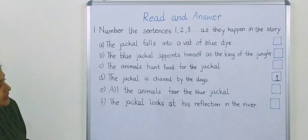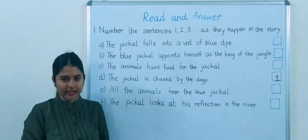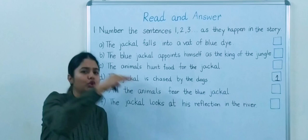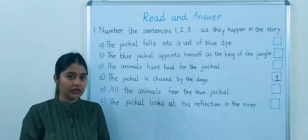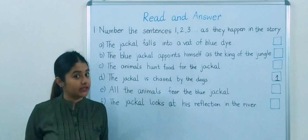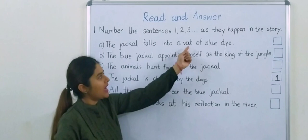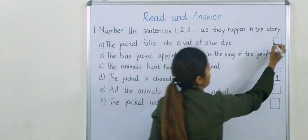Then, what happened next? When he was being chased by the dogs, he ran for his life. And while he was running, he saw an open window of a washerman's house. So he jumped through the window and entered his house. But where did he go? He fell down in a big tank, and the tank was filled with blue colored dye. So the next is, the jackal falls into a vat of blue dye. We will give second point to this sentence.